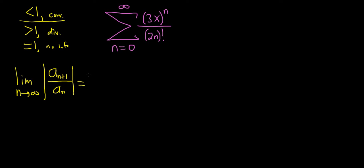Okay so this is equal to the limit as n approaches infinity. And we still have the absolute value. So first let's focus on a sub n plus 1. That basically means we have to replace all of the n's with n plus ones. So we'll have 3x to the n plus 1.